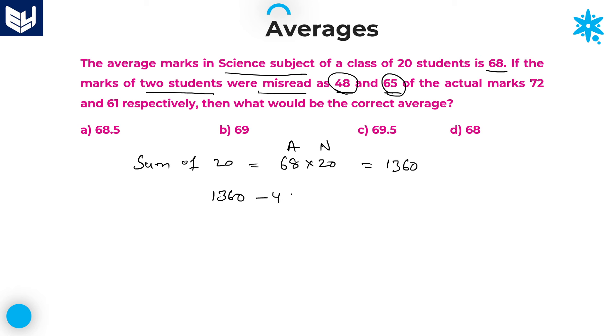These are wrong numbers. You can subtract these numbers: minus 48 minus 65. The actual marks are 72 and 61 respectively, so add those values. Now the question is, what is the correct average? Therefore, the correct average equals this total sum divided by number of students, 20. There is no change in number of students.